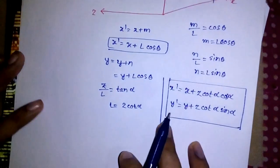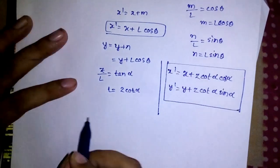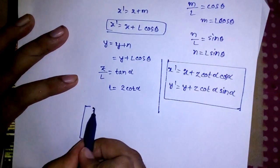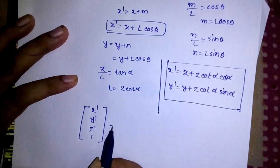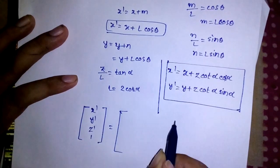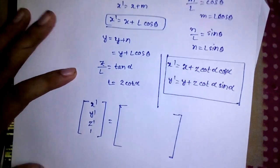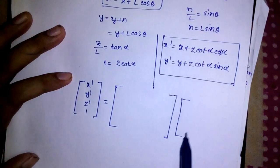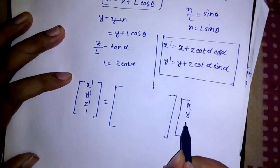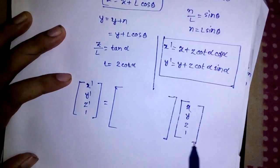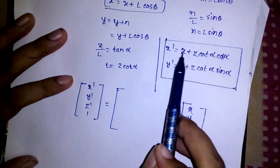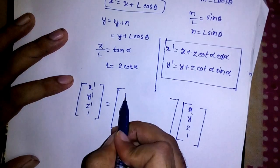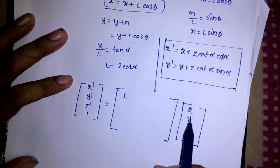Now let's try to represent this in form of homogeneous matrix. Let's take a big matrix: X dash, Y dash, Z dash, and 1. Something will be a transformation matrix. Let's quickly write down the old coordinate. Here in the first expression, X dash contains X, so I need an X.